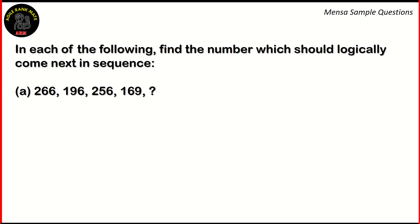Now let's look at the next question. This one has three parts because we have three sequences that need to be solved. In each of the sequences, we need to find the number which logically comes next. In sequence A, we have 266, 196, 256, and 169. We need to find the logic behind it. These aren't odd, even, or perfect squares straightforwardly.